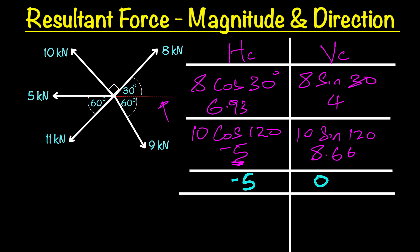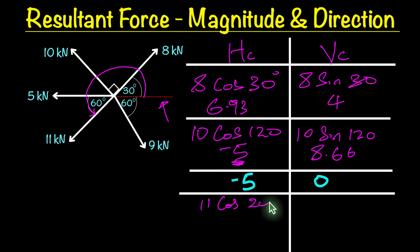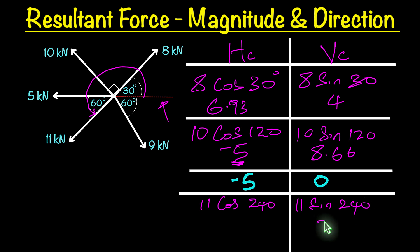On to the 11 kilonewtons. Again, we measure all the way from our reference line — that red dotted horizontal line. Measuring from that line to our 60 degrees, it's just going to be 180 plus 60, giving us 240 degrees. So our horizontal force component is 11 cos 240 and vertical is 11 sin 240, giving us negative 5.5 for horizontal and negative 9.53 for vertical.